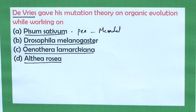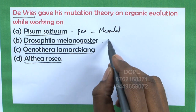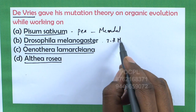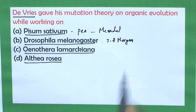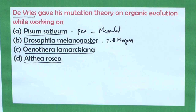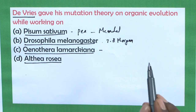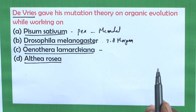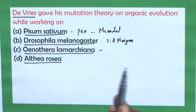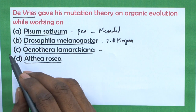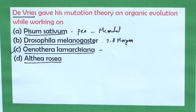Option B is Drosophila melanogaster — T.H. Morgan worked on Drosophila melanogaster and gave experimental verification for the chromosomal theory of inheritance. Option C is Oenothera lamarckiana, also called evening primrose. De Vries worked on this plant and proposed the mutation theory. Hence, the correct option is option C, Oenothera lamarckiana.